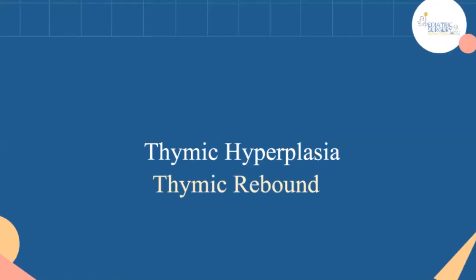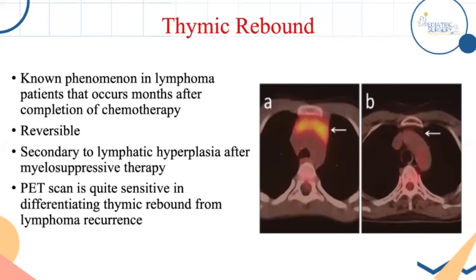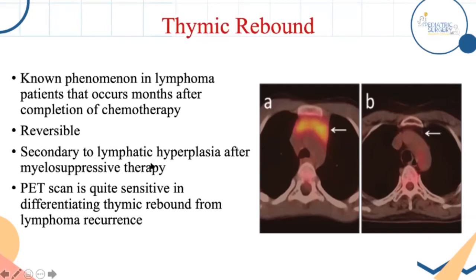Thymic rebound is another form of thymic hyperplasia occurring not in infants but in patients treated for lymphoma. After lymphoma treatment, imaging may show a larger thymus — the question is whether this represents rebound or recurrent lymphoma. PET scan differentiates them: uptake indicates lymphoma; no uptake indicates thymic rebound hyperplasia. Treatment is observation; biopsy only if PET scan cannot exclude lymphoma.